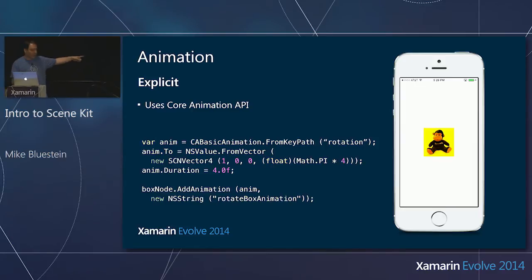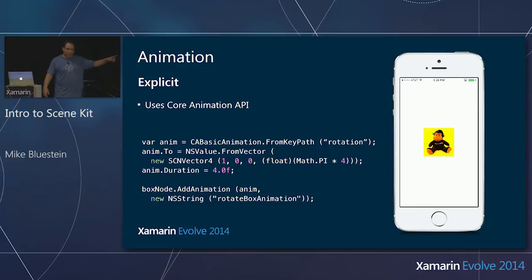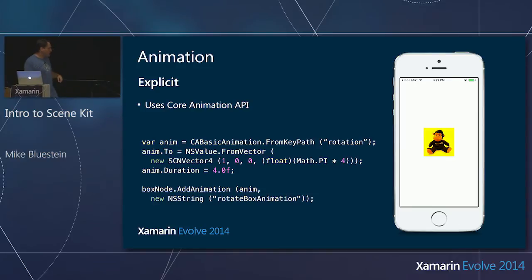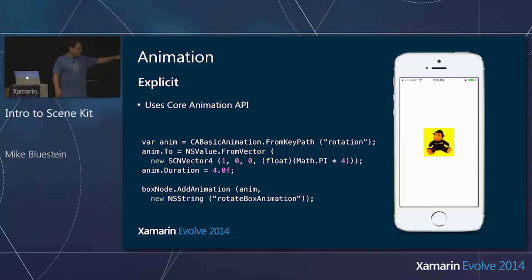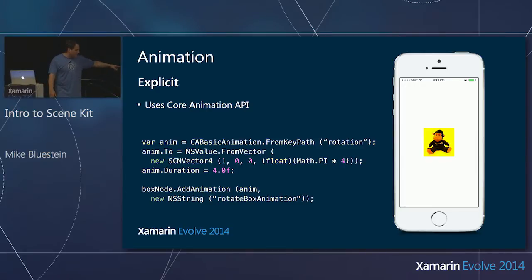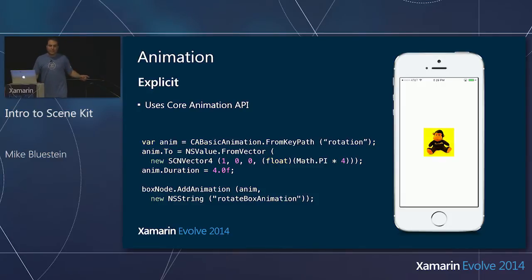When working with explicit animations in SceneKit, there is no SCNBasicAnimation — you work directly with the Core Animation class CABasicAnimation. I come down and add the animation to the node in the scene graph, much like you'd add it to a layer.